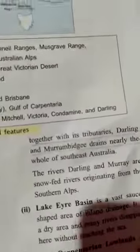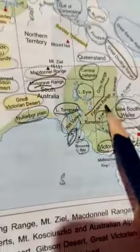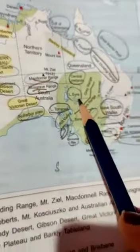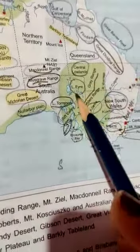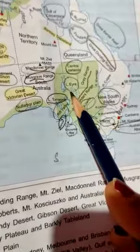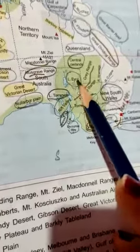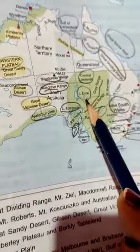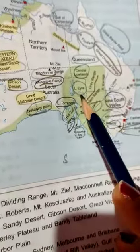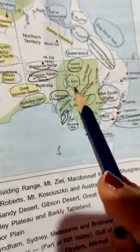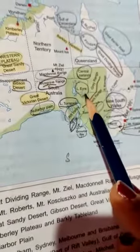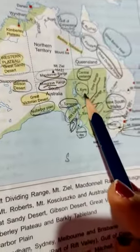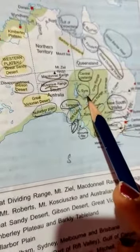Next is Lake Eyre Basin. The Lake Eyre Basin is the inland drainage basin of Australia which lies in the middle part of the Central Lowlands. This basin lies 11 meters below sea level. All the small rivers or streams that do not reach the ocean fall into Lake Eyre. It is the largest salt lake in the continent of Australia.